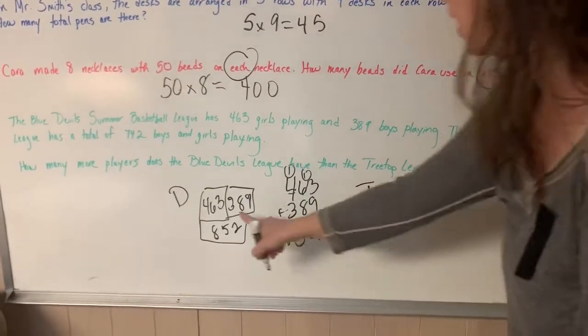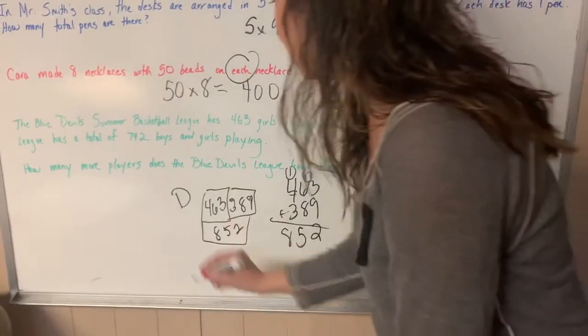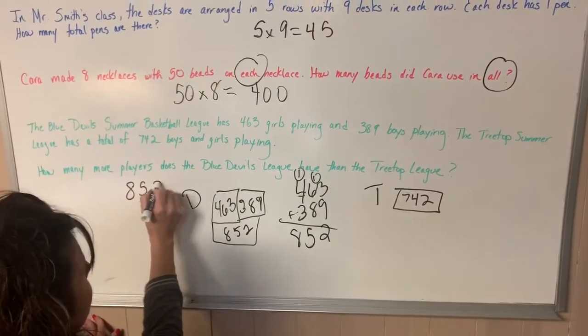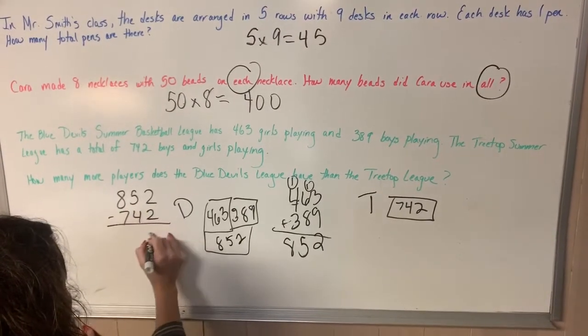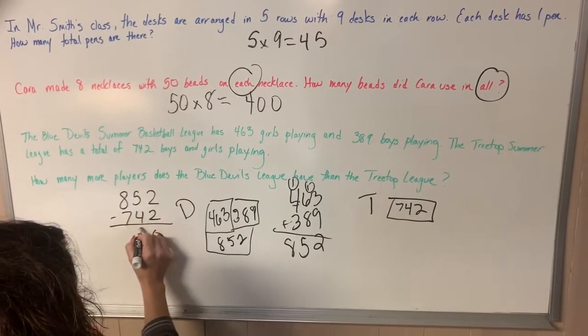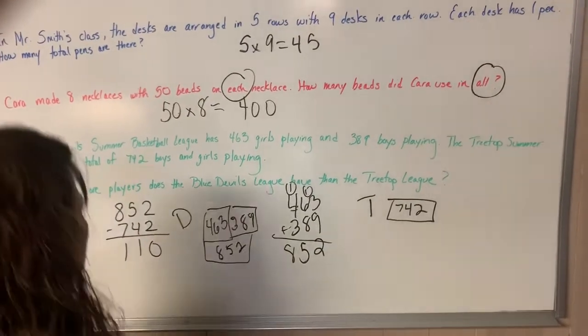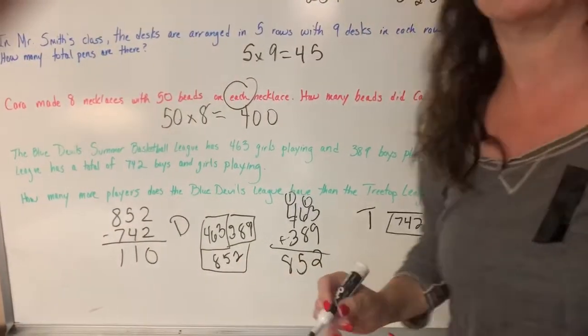So I have to subtract 742 from 852. I'm going to do that over here. And that will be my answer. 2 minus 2 is 0. 5 minus 4 is 1. 8 minus 7 is 1. So there are 110 more players in the league.